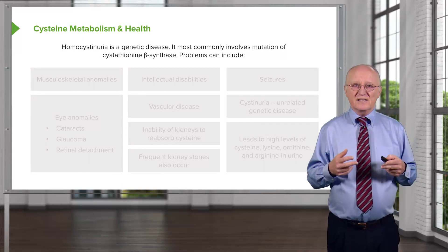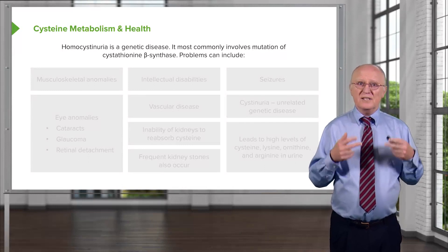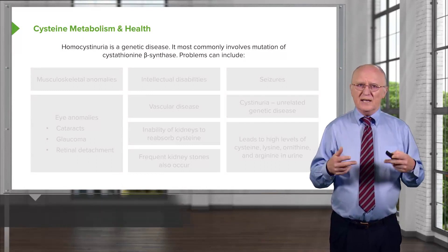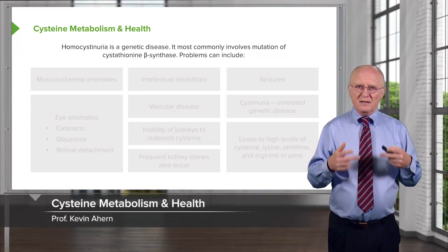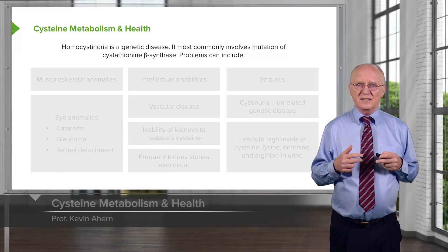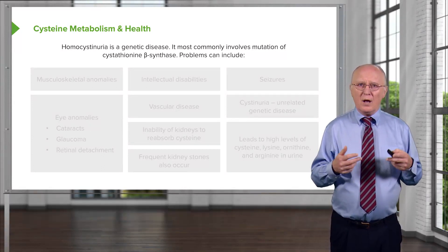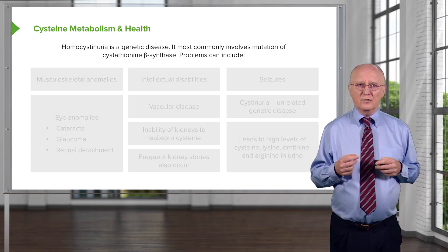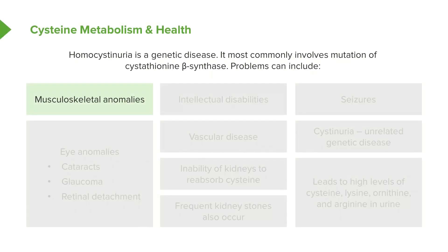Homocysteinuria, as I said, is a pretty severe disease. It's a genetic disease caused by deficiency of an enzyme known as cystathionine beta synthase. There are many problems that can arise in homocysteinuria. There are musculoskeletal anomalies that occur, intellectual disabilities — and one of the reasons we have these intellectual disabilities is because of the problems with the nerve tissue in the brain.